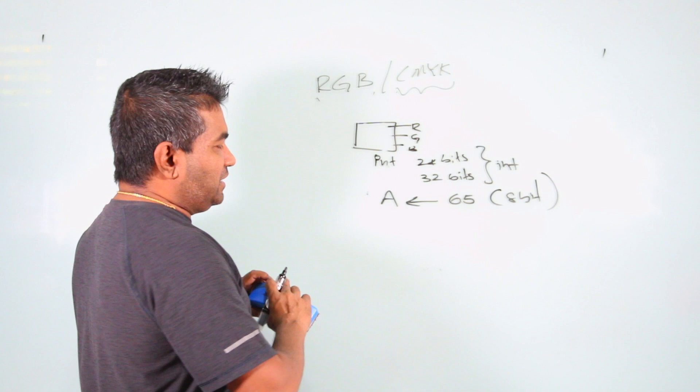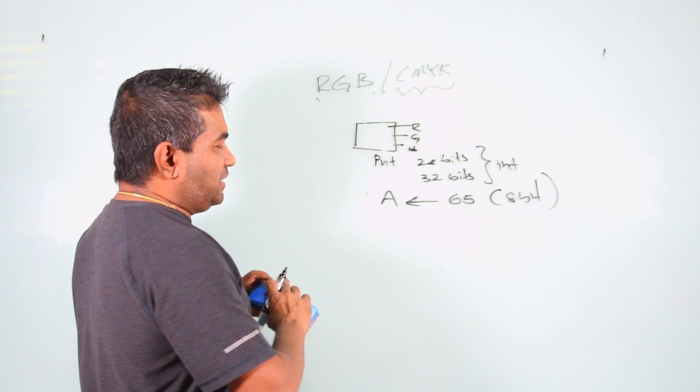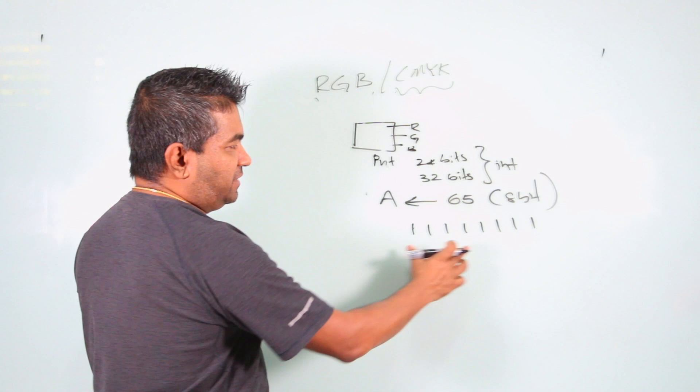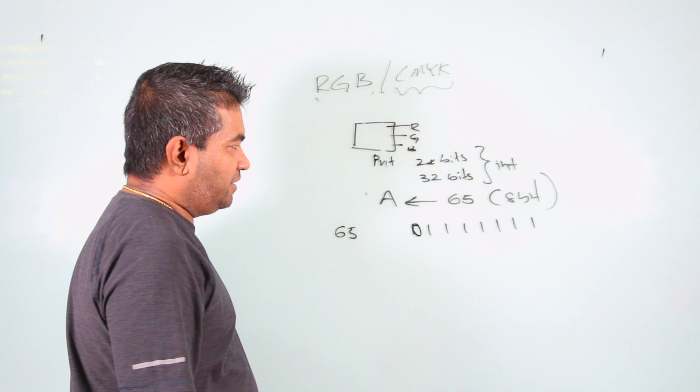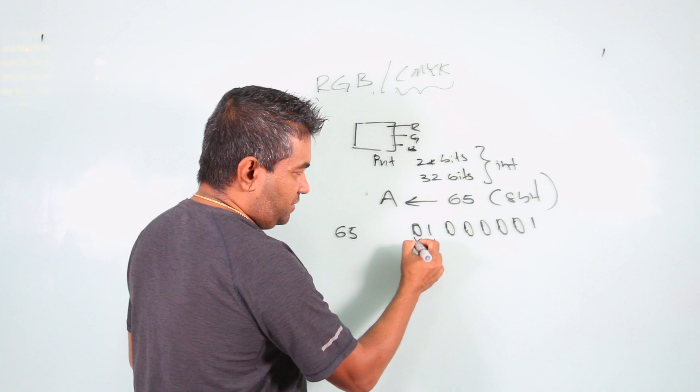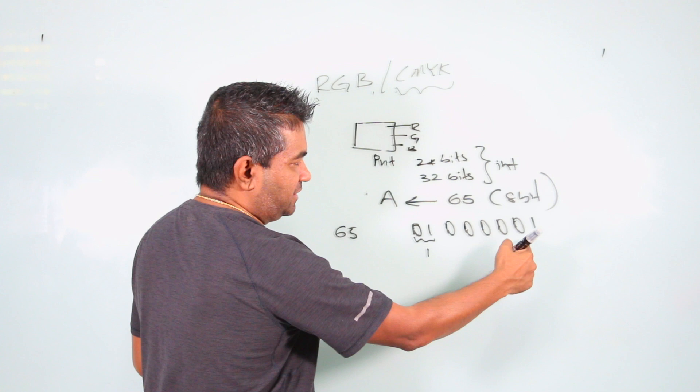65 in binary is 01000001 — that is, 64 plus 1 equals 65. This is the binary value for 65, representing the character 'A'. The letter 'B' would have a slightly different binary value. So each character in your message is represented as an 8-bit binary number.